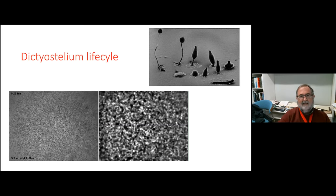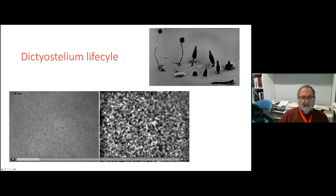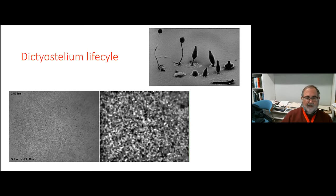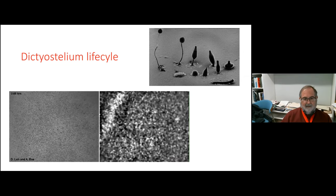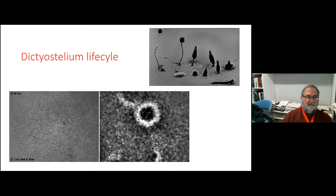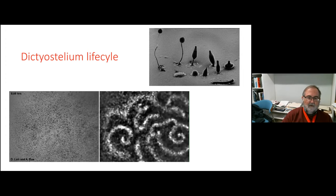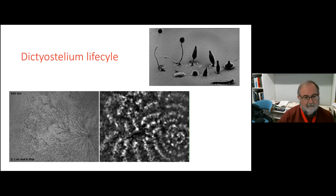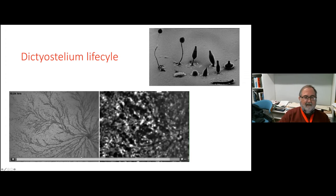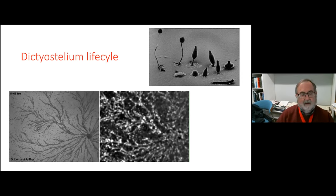The life cycle of Dictyostelium works as follows: they start out as individual cells, but when they starve, they aggregate together and go through an amazing series of morphological transformations. The aggregation pattern happens as you'll see in the movie. On the left you see cell density; on the right, a processed image. As the hours go by after starvation, you begin to see nonlinear waves propagating through the colony, guiding the cells. As time goes on, the cells communicate with each other and aggregate. Eventually one large spiral wave takes over the geometry, and you get a very large clump of cells forming.